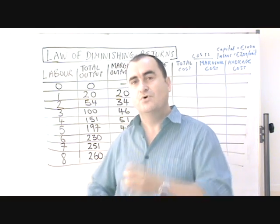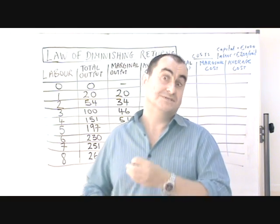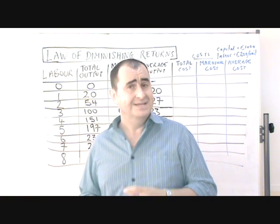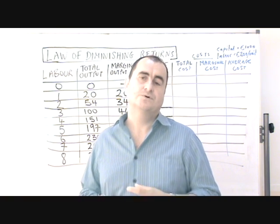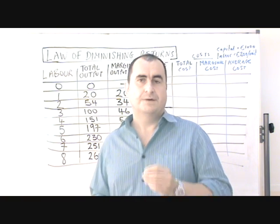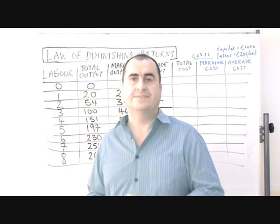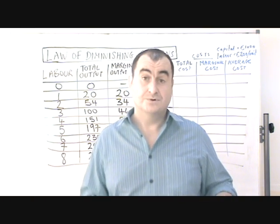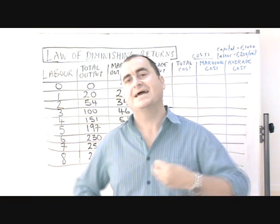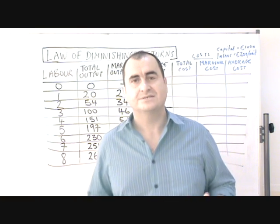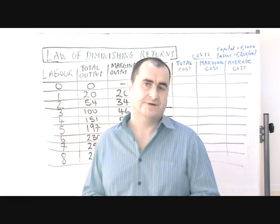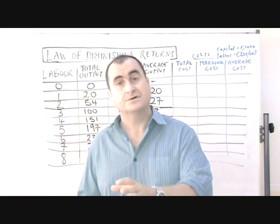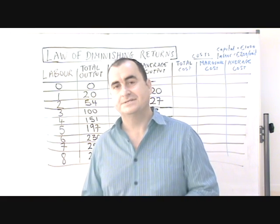And if they keep adding more and more units of labour, then eventually average output and even total output would fall. Imagine that case — you add a worker and the output of the whole business is lowered, because the extra worker simply gets in the way; there are too many workers by that stage. Of course, they should be increasing the quantity of capital and land.